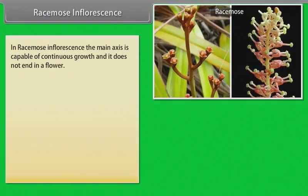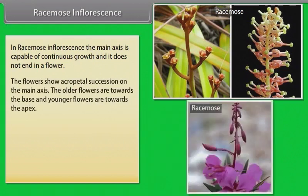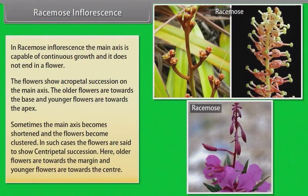In racemose inflorescence, the main axis is capable of continuous growth and it does not end in a flower. The flowers show acropetal succession on the main axis — older flowers are towards the base and younger flowers are towards the apex. Sometimes the main axis becomes shortened and the flowers become clustered; in such cases the flowers show centripetal succession, where older flowers are towards the margin and younger flowers are towards the center.